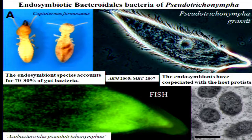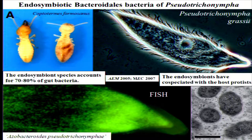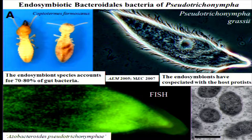We applied a similar method for a second example: the endosymbiont of the Coptotermes termite, which is famous as a pest. This termite harbors a cellulolytic protist, Pseudotrichonympha. The endosymbiont belongs to the Bacteroidetes. In this case, the endosymbiont species accounts for more than 70% of gut bacteria.